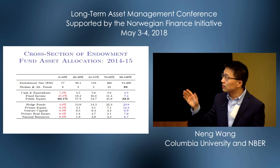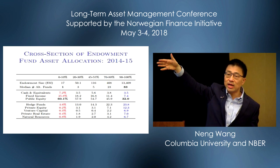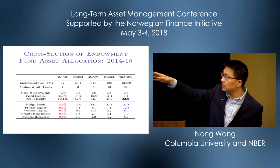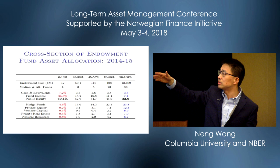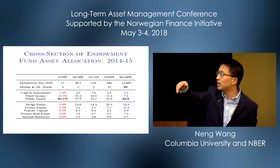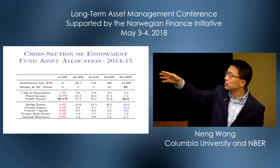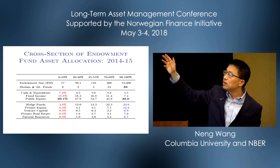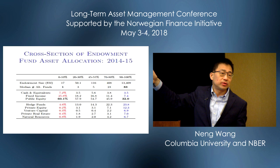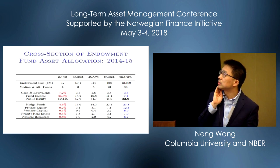Just to make sure you're convinced: if you sort based on the bottom and top decile, you see that public equity has gone down — it's 60% for the bottom decile and 32% for the top decile size-wise. There's a huge crowding-out effect, especially on fixed income and cash. And of course alternatives have gone way up as you increase the size of the endowment on average.